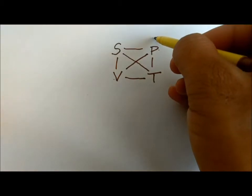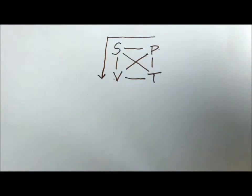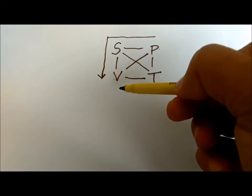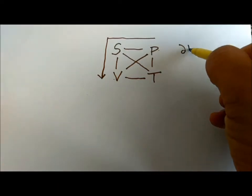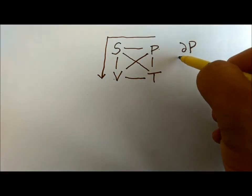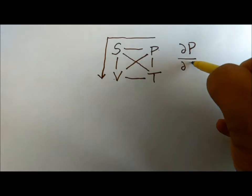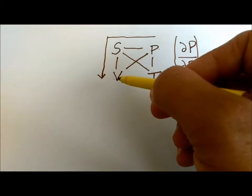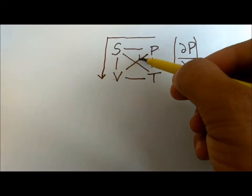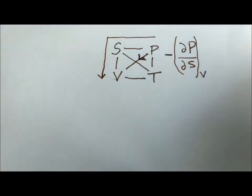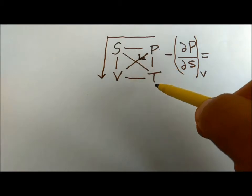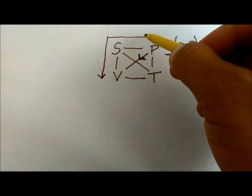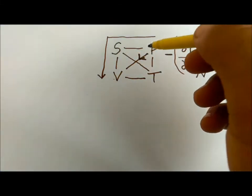Let us start with P. We go from P to V, so when we go from P to V this is del P over del S at constant V. When the arrow goes down, the same rule is applied — it is with a negative sign. What is left behind is T, so we go from T.